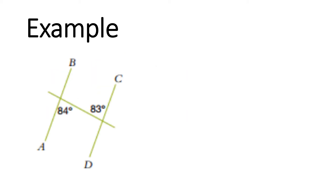Let's have a look at a final example. We have two lines going in one direction — AB and DC — and then one line that goes through both of them. So the two lines that might be parallel are AB and DC, which means the other line is our transversal. Now we need to look to see if we have an alternate, corresponding, or co-interior angle.